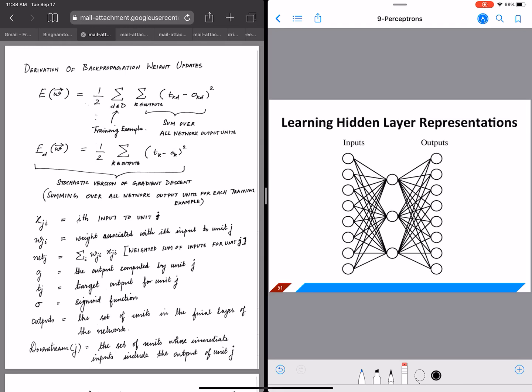So let's look at the diagram on the right. We have here inputs, outputs labeled, and then we also have a layer in between which we will call the hidden layer. And now we have an error function, the first equation on the left, where we have E(w) = 1/2 * sigma over training examples d in D * sigma over k in outputs * (tkd - okd)^2.